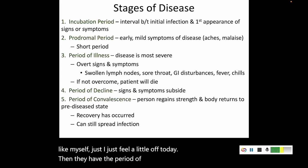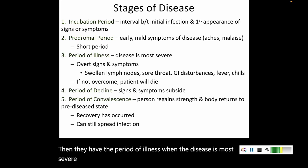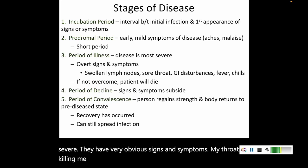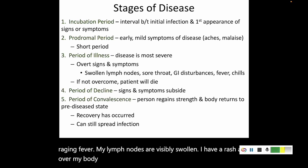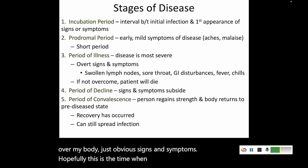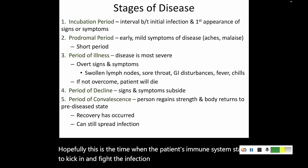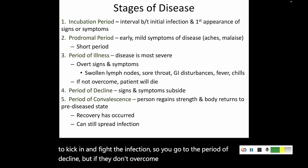Then they have the period of illness when the disease is most severe — very obvious signs and symptoms: 'My throat is killing me, I definitely have some GI disturbances, I have a raging fever, my lymph nodes are visibly swollen, I have a rash all over my body.' Hopefully this is when the patient's immune system starts to kick in and fight the infection, moving to the period of decline. But if they don't overcome this, the period of illness continues and the patient will die of the infection.